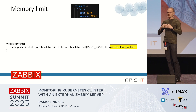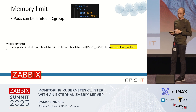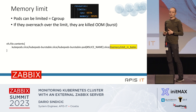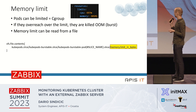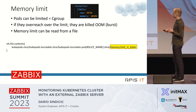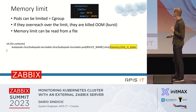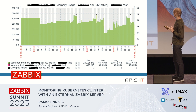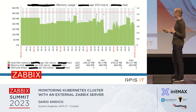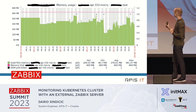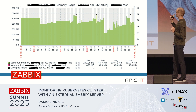Regarding memory limits — pods can't grow to infinity; they can be limited. If they exceed the limit, the out-of-memory manager will perform a kill on them. Memory limits can be easily read from a file, and we utilize VFS file contents for this. Looking at the graph, the red line is the memory limit, the green line is memory utilization, and the black dots are the moments when the out-of-memory manager performed a kill — you can see a sudden drop in the graph right after each kill.